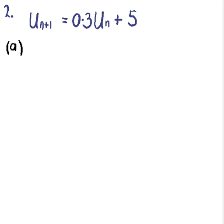This is question number two. We're told that a sequence is defined by the recurrence relation U_{n+1} equals 0.3 times U_n plus 5, with the first term U_1.